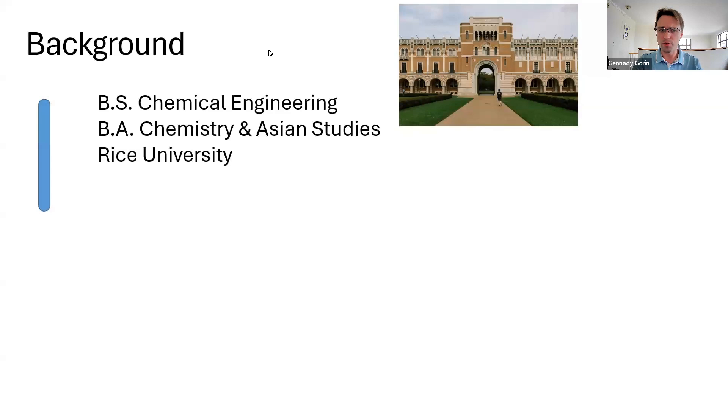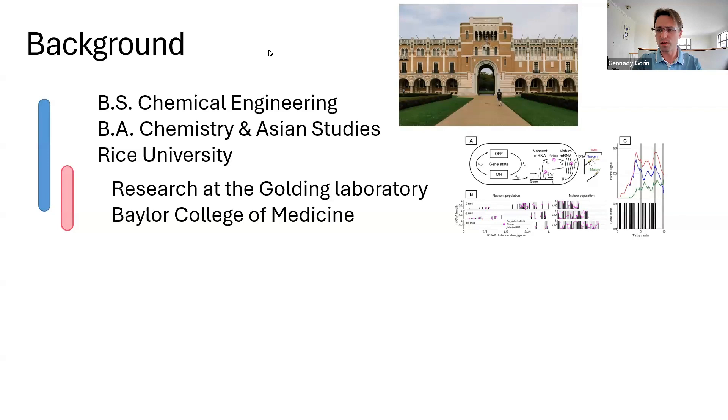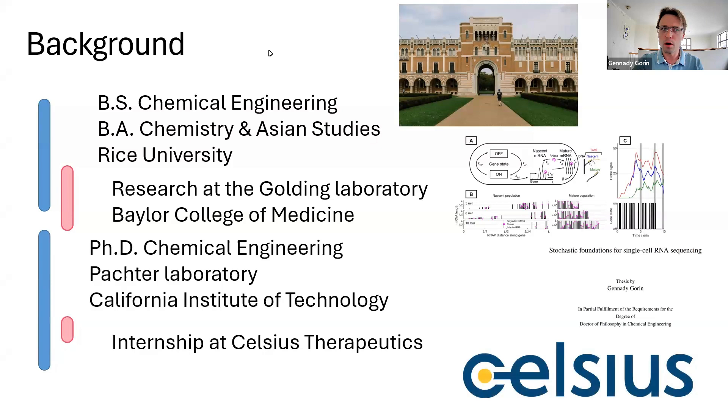The first thing to know about me is I'm a chemical engineer. I did a bachelor's in chemical engineering at Rice. I worked for Edo Golding, which is responsible for my interest in stochastic transcriptional modeling. Then I moved on to Caltech for my PhD, again in chemical engineering. Later on in my PhD career, I interned with Celsius Therapeutics, where I applied this theory and software to large patient data sets.